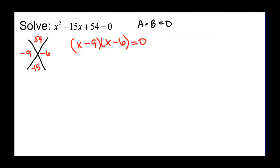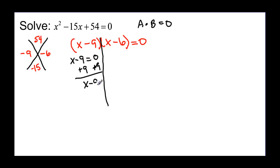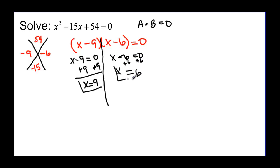Now that it's factored, what if x minus 9 equals zero? Adding 9 to both sides, x equals 9. Then, what if x minus 6 equals zero? Adding 6 to both sides, x equals positive 6.